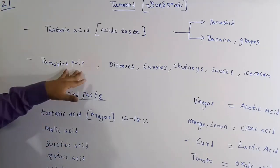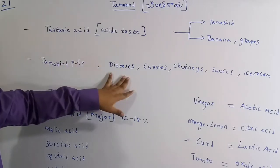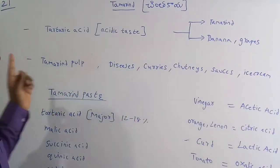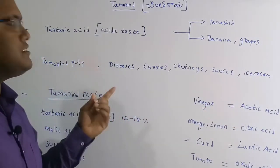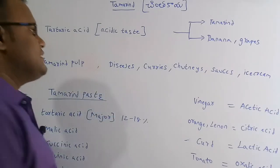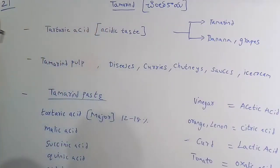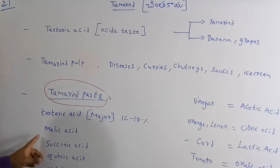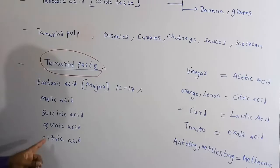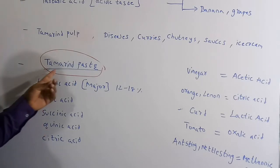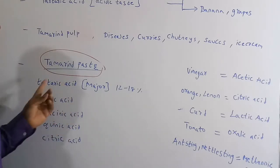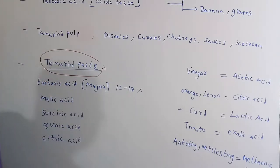This tamarind pulp is used in traditional medicines to cure diseases. It is also used in curries, chutneys, sauces and ice cream. In the tamarind paste, the acids present are tartaric acid, malic acid, succinic acid, citric acid and oxalic acid. Among these, the major component is tartaric acid at around 12 to 18 percentage.